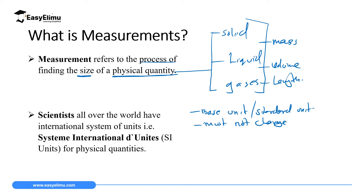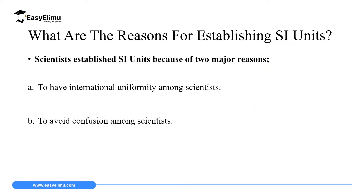In 1960, scientists realized there was confusion and no unity or harmony among scientists. So they decided to come up with what we call the Standard International Units — the Système International, or SI units. The SI units are used to measure the size of physical quantities, and we are going to look at them in a few seconds.